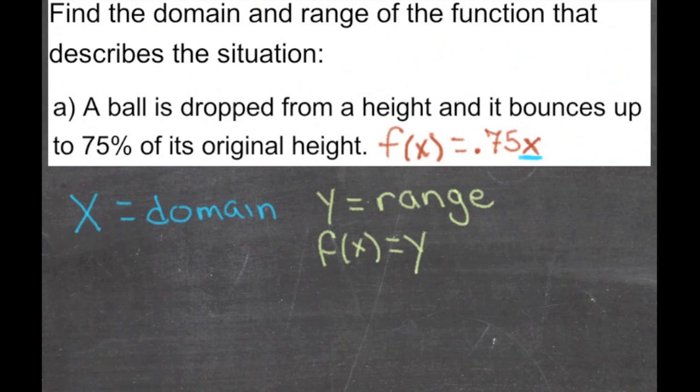To find out what numbers could go into the value here, we need to look at the function itself. This function tells us that 0.75 times x, which is a multiplication of a height times three quarters of its height, is going to be our output. So we have an input that's a height and an output that's also a height.